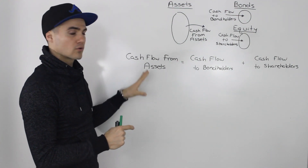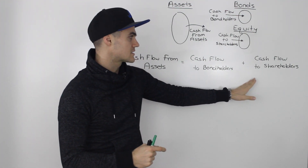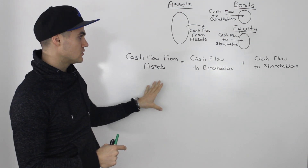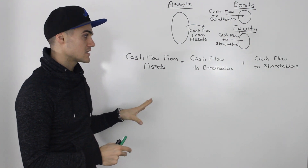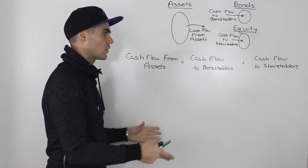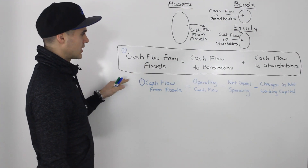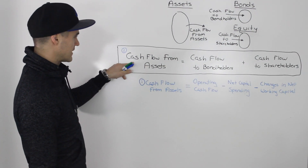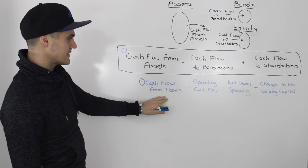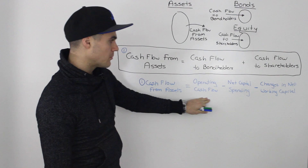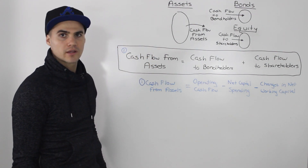I'm going to take each of these components and go into more detail. There will be a lot of footnotes and references, but in the end it all flows back to this general equation. The first component we're going to talk about is cash flow from assets. Footnote one: cash flow from assets equals operating cash flow minus net capital spending minus changes in net working capital.